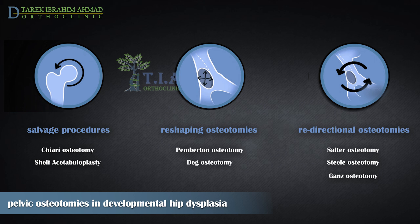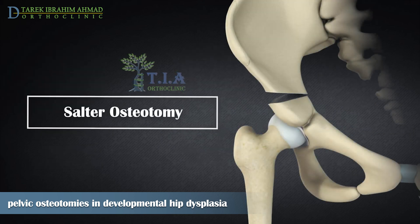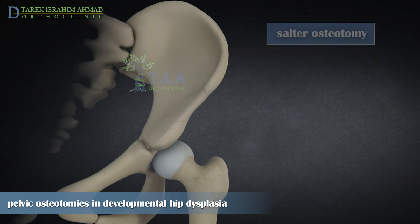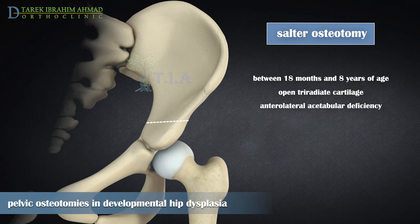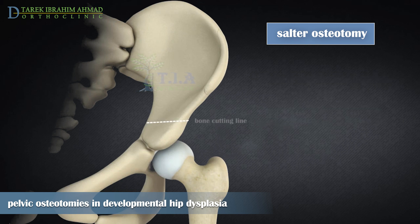In general, if a concentric reduction is not possible by any described methods, salvage procedures are opted. Salter osteotomy is performed in younger patients between 18 months and eight years of age, typically with open triradiate cartilage. The primary indication for Salter osteotomy is an anterolateral acetabular deficiency in an otherwise concentrically reduced hip.